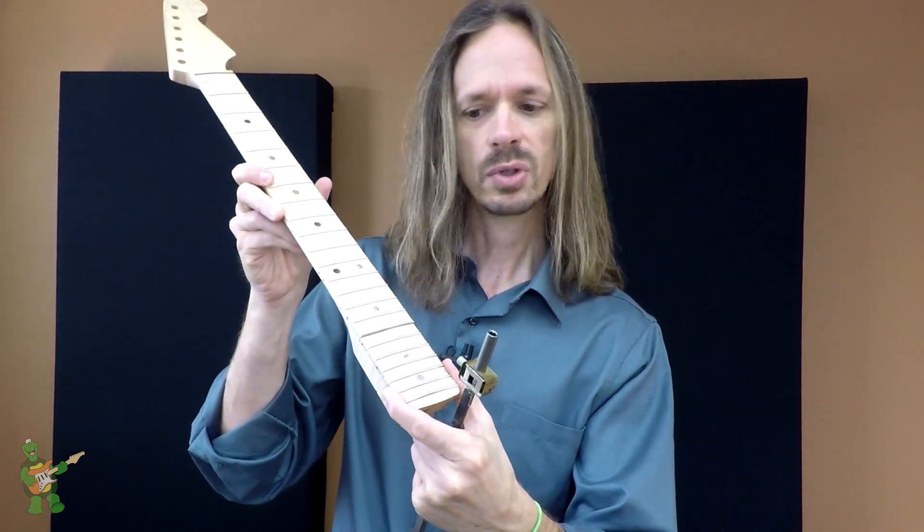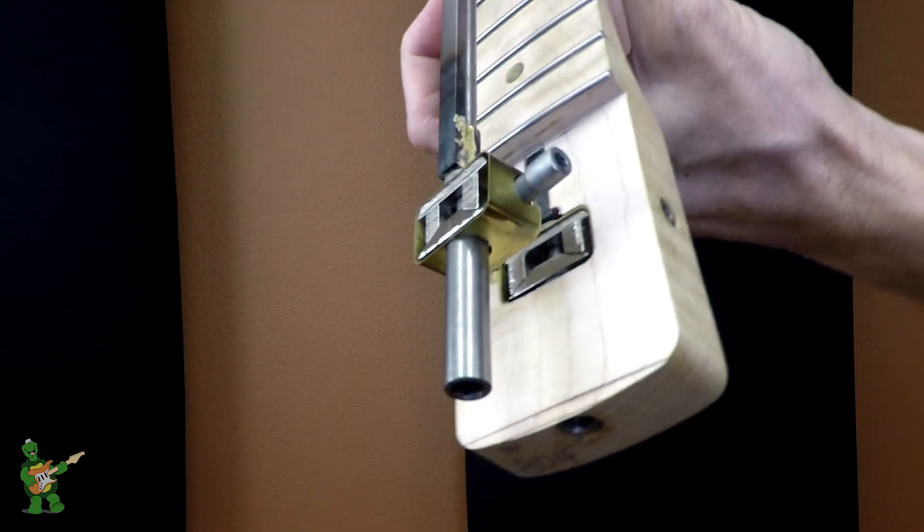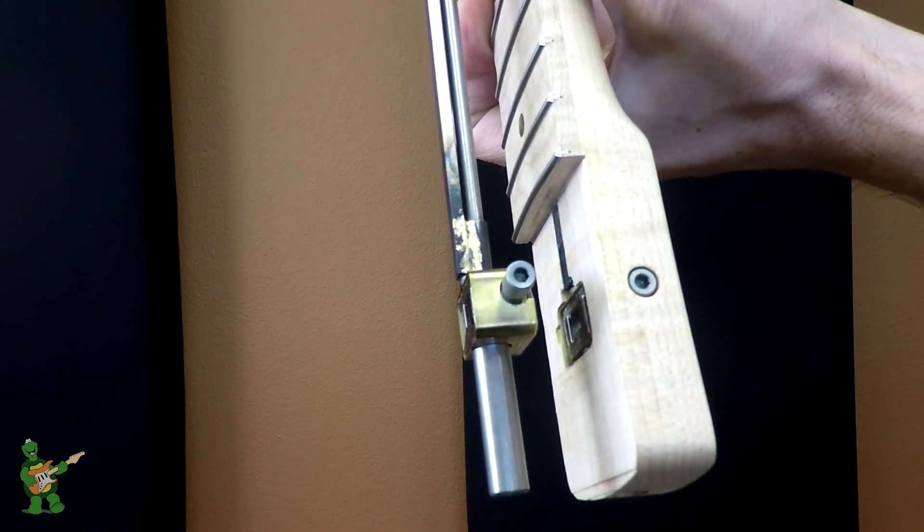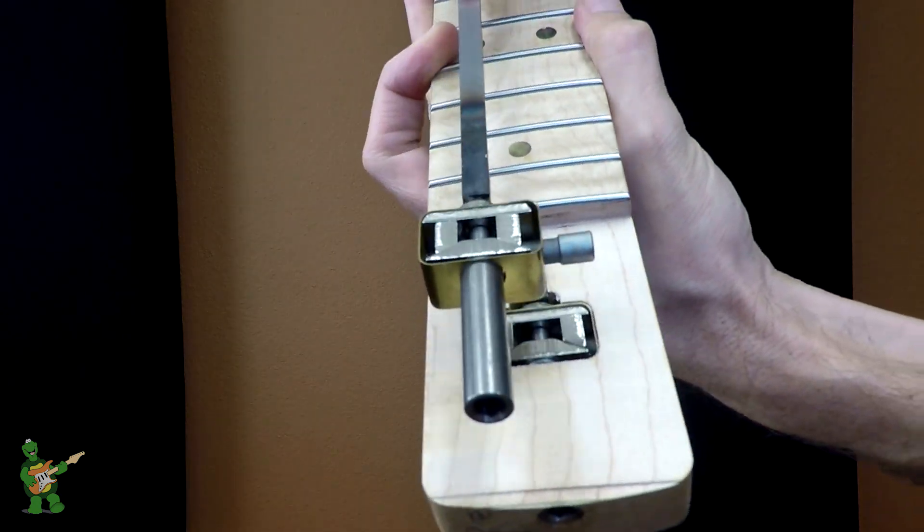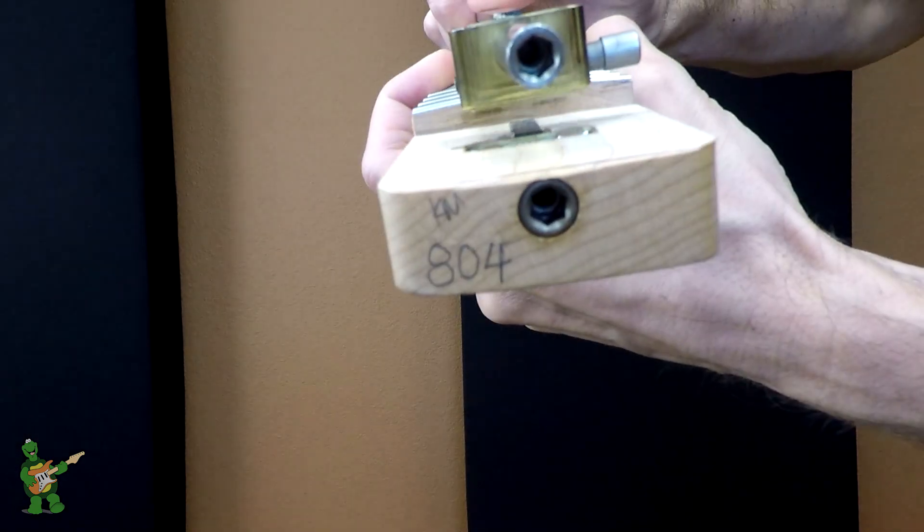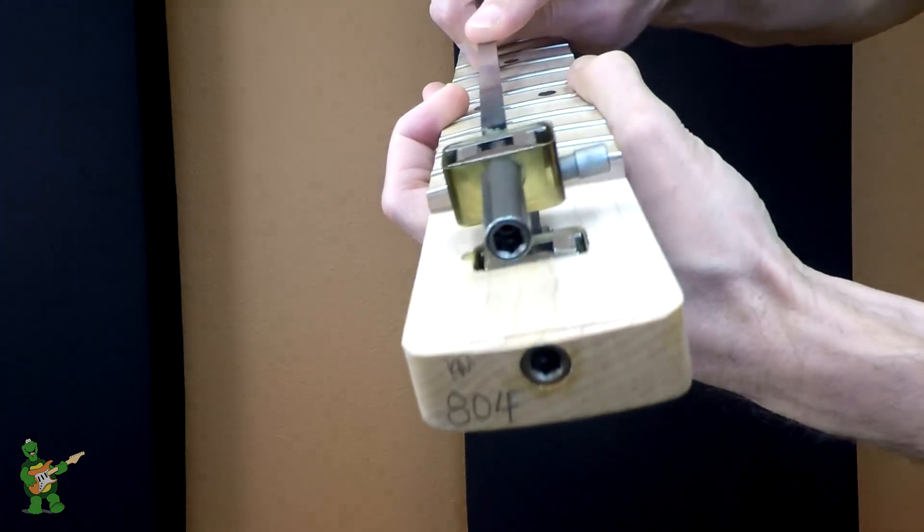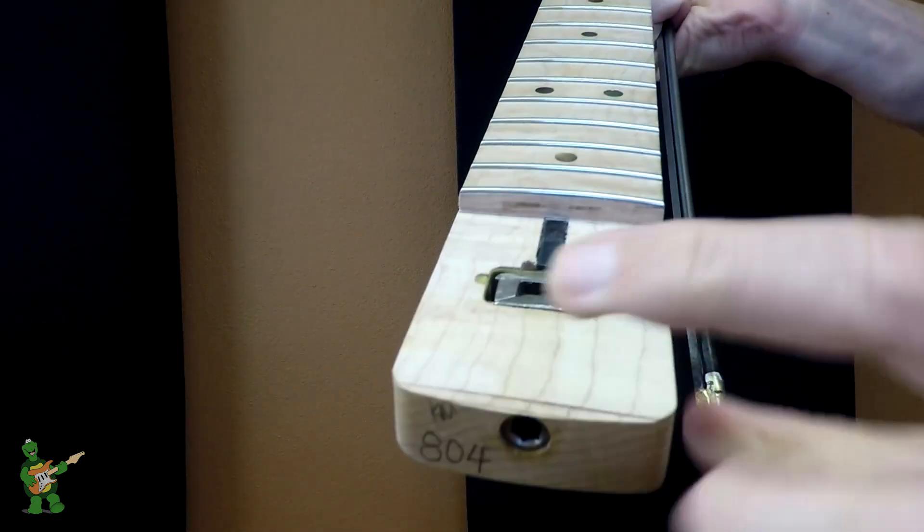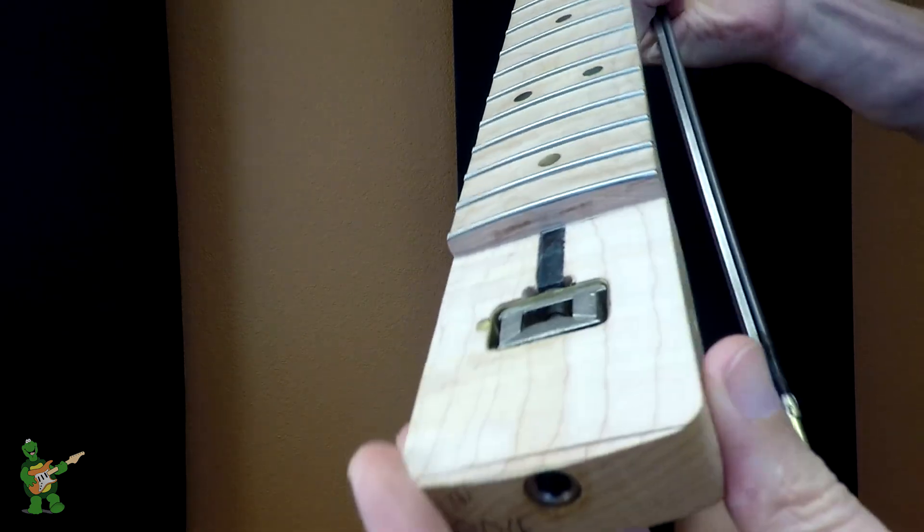You can see how the side adjust mechanism sits inside the neck. You can see that here's the adjustment nut and here is the mechanism, and then the side adjustment nut is right there on the side of the neck.